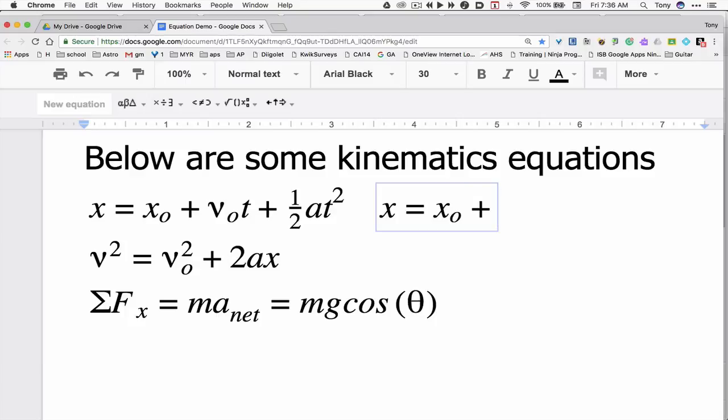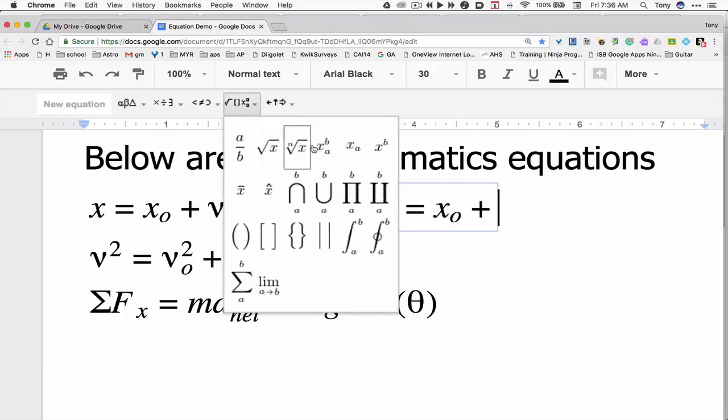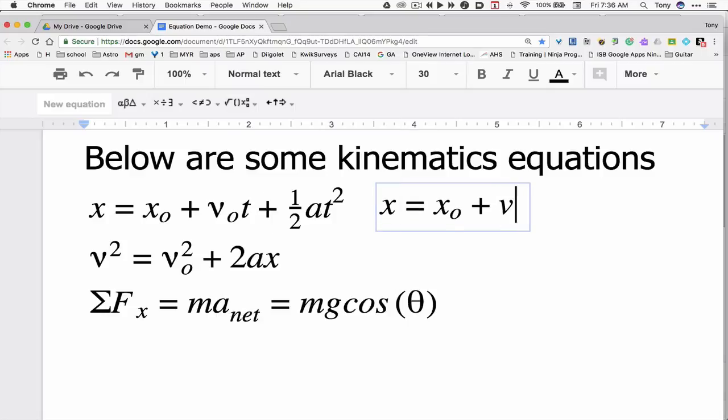And then I want V naught. Now I want kind of a, let's say I'll just do V. Oops, did it again. I want V naught. So X subscript A, I'll type V, right arrow, go to 0, right arrow to get out of that, type T, plus.